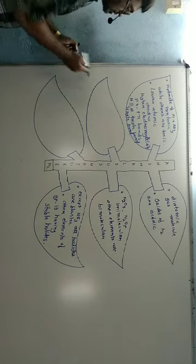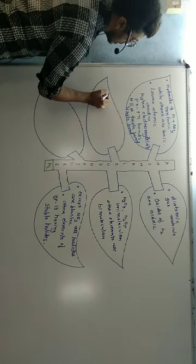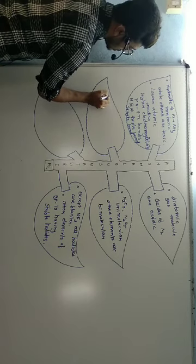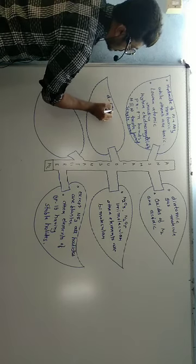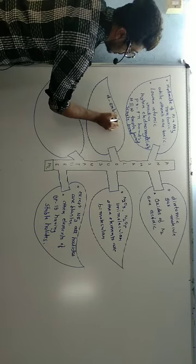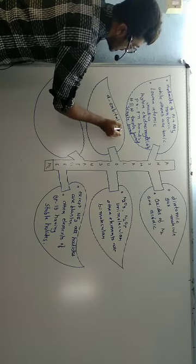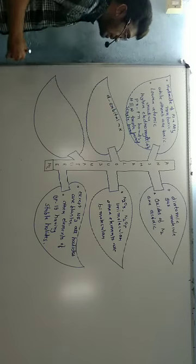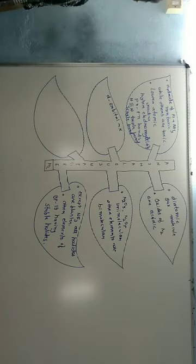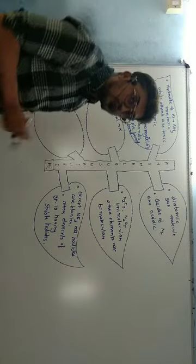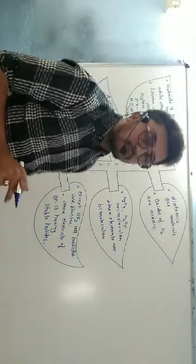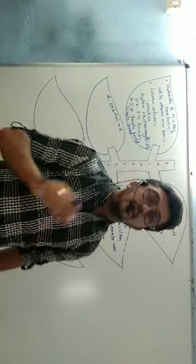Another anomalous property relates to nitrogen's electronic configuration: 1s², 2s², 2p³. In the second energy level, there is no d-orbital present. This means nitrogen cannot undergo bond formation involving d-orbitals.